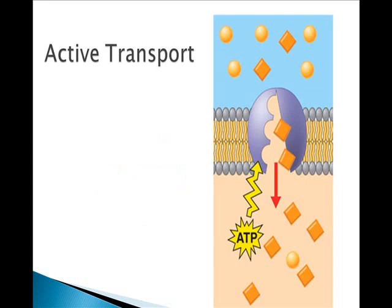All cell membranes show selective permeability, meaning some substances can cross and others cannot. Membrane barriers are vital to the cell's capacity to increase, decrease, and maintain concentrations of molecules and ions required for cell metabolism. In passive transport, material passes through transport proteins without an energy boost, and this is also known as facilitated diffusion.